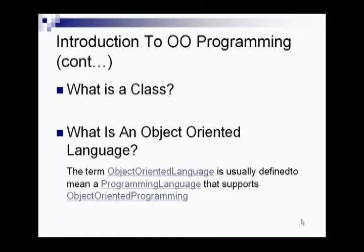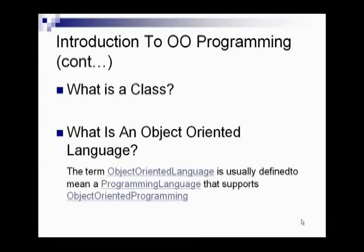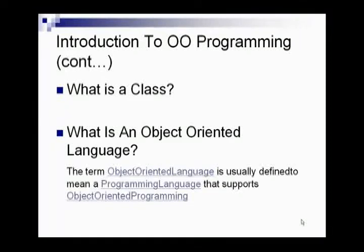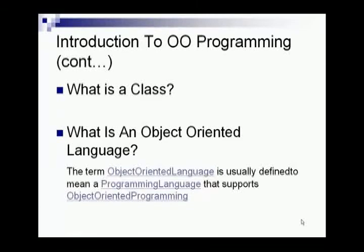Before moving to the pure object oriented concepts, we have to get a brief idea about object oriented languages. Object oriented language means a programming language that supports object oriented programming. If a language supports object oriented programming, it can be called an object oriented language.